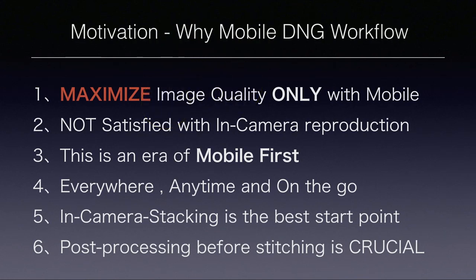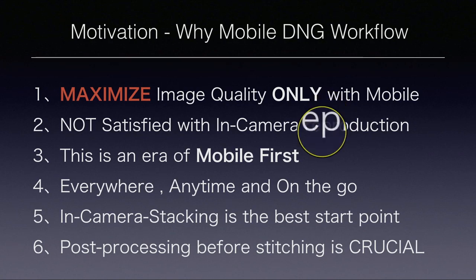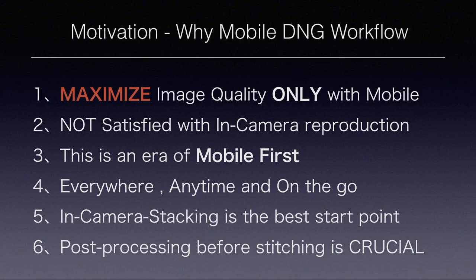Express DNG8 gives you a JPEG file directly from the imaging signal processor inside the camera, but I am not satisfied with the in-camera reproduction — it's far below my expectation for panorama photography. This is also an area of mobile-first. Everyone has a mobile phone, and as technology evolves, our cell phones have very powerful chipsets. Our cell phones are already powerful enough to make fine-tuning for panorama photos.